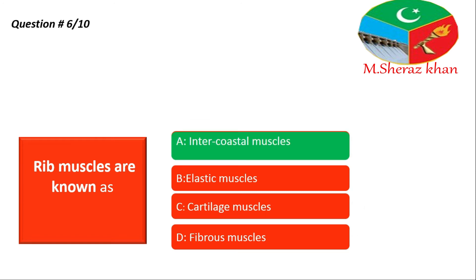So the right answer is option A — it is known as the intercostal muscles. Students, ek baat hamesha yaad rakhen: ribs ke darmiyan definitely muscles maujood hain. Jo do ribs ke darmiyan muscles hoti hain, unko hum intercostal muscles ka naam dete hain. So the right answer is intercostal muscles, option A.